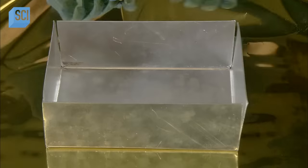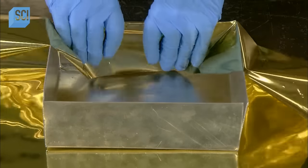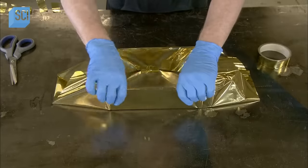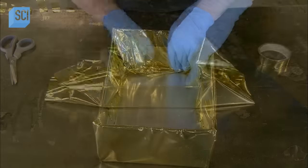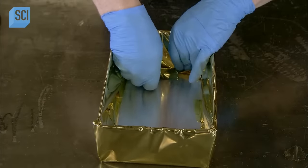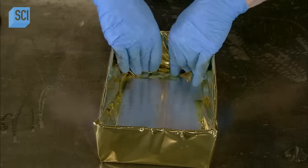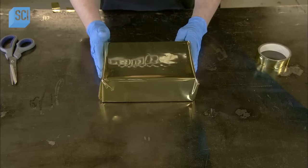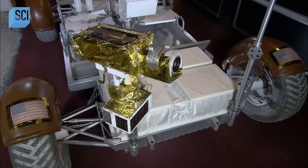After the seams have been welded, he wraps the cover in mylar, which is a strong plastic film. The wrap is an extra layer of protection against wind-borne particles known as micrometeoroids. They also wrap the camera and other parts of the rover with mylar.